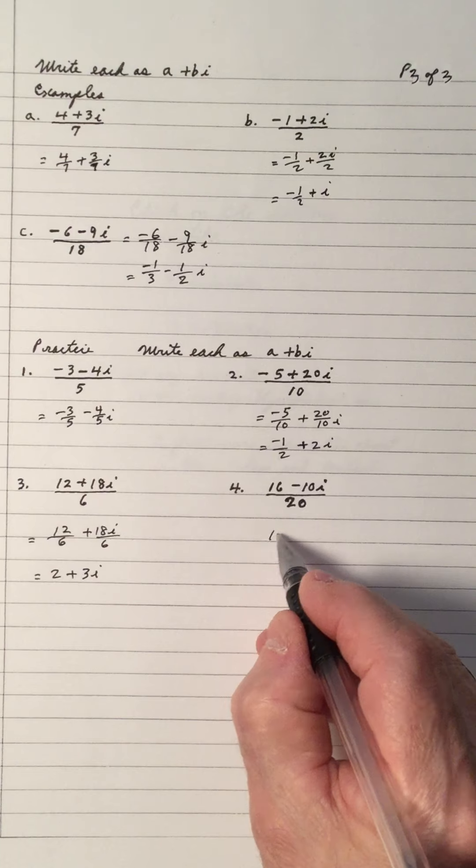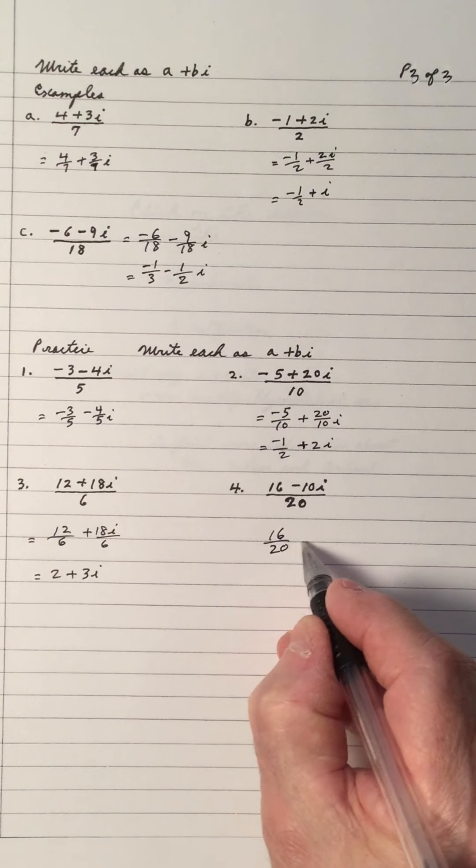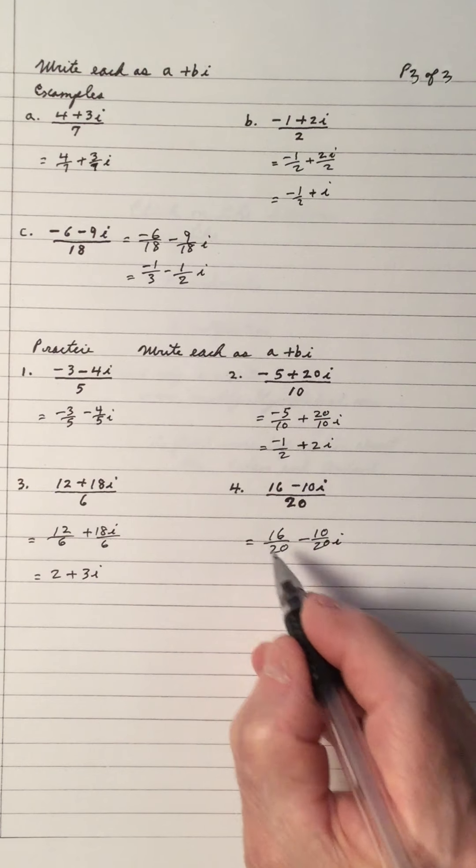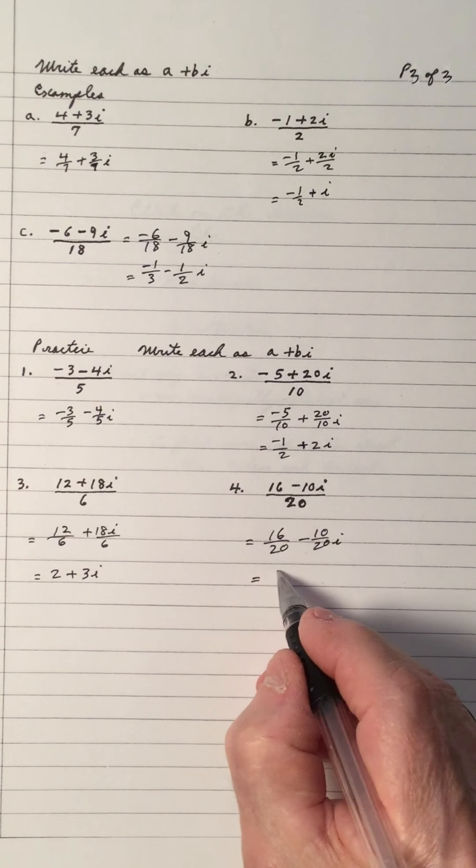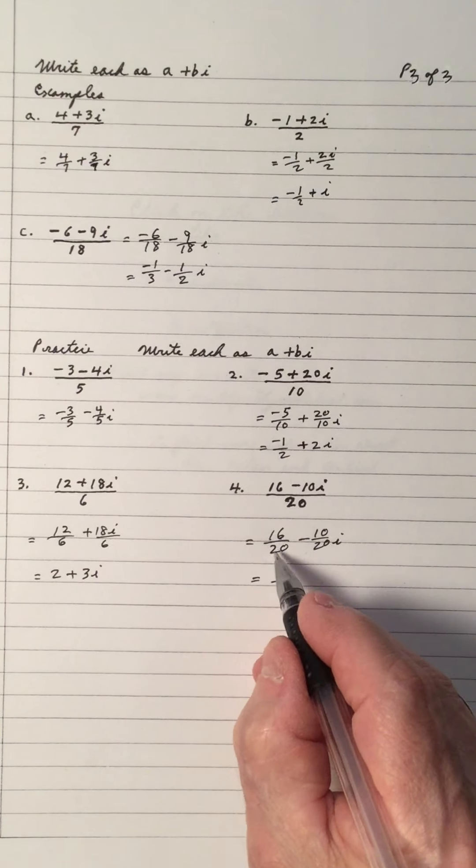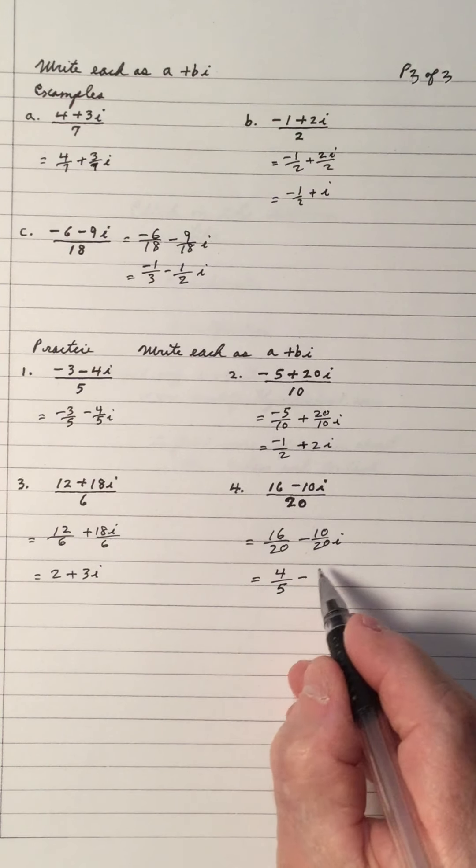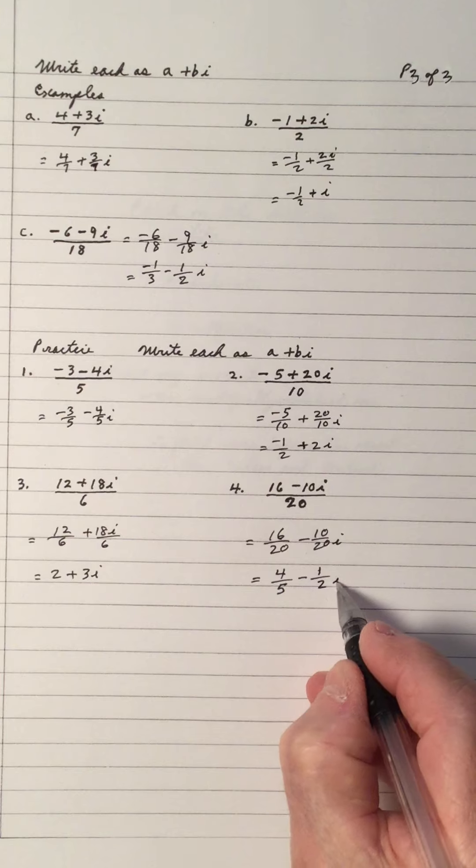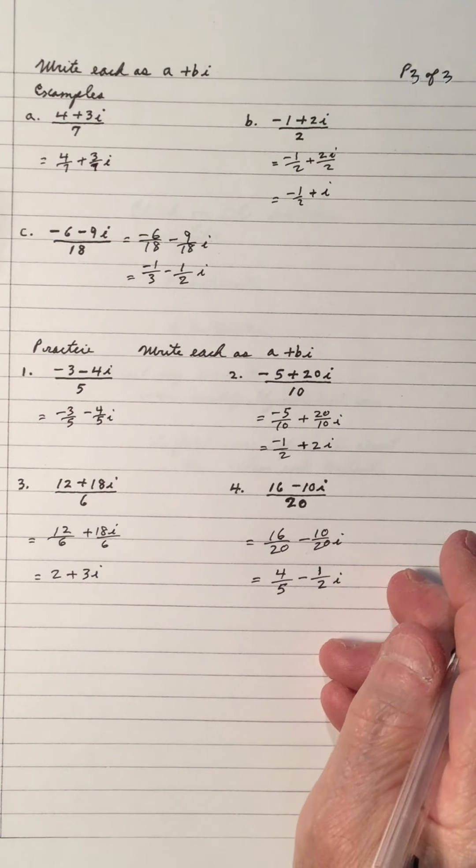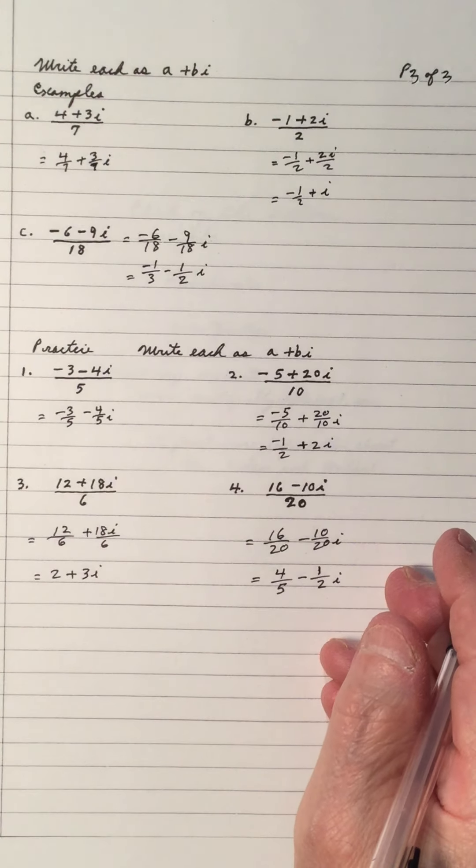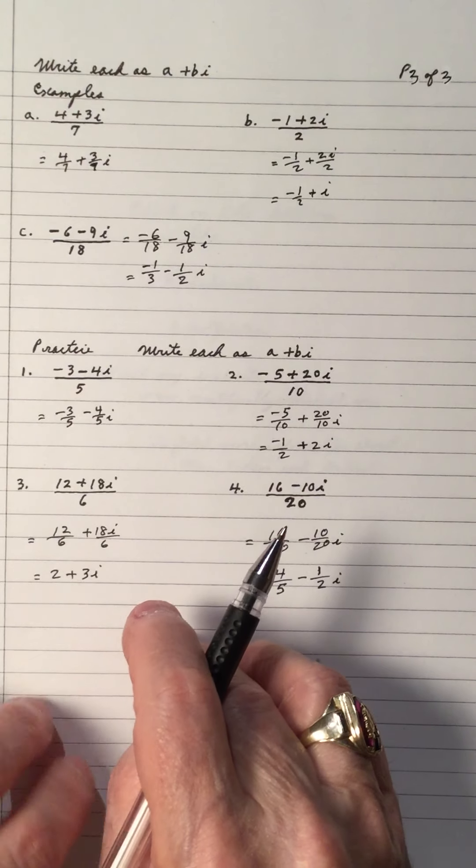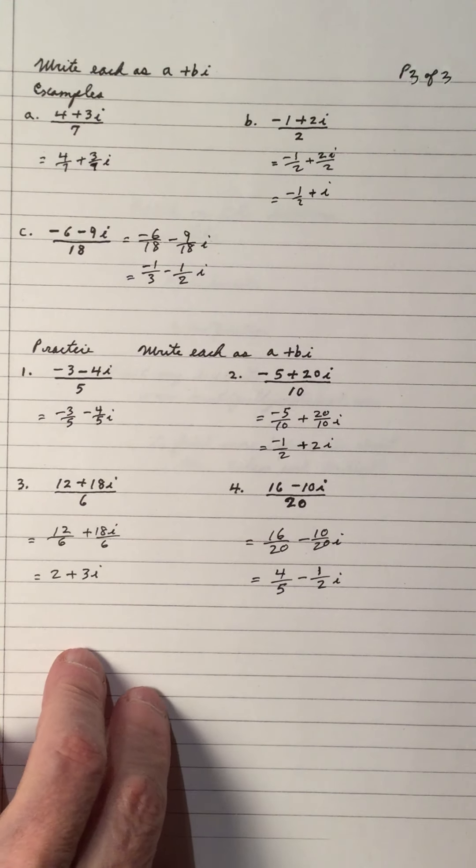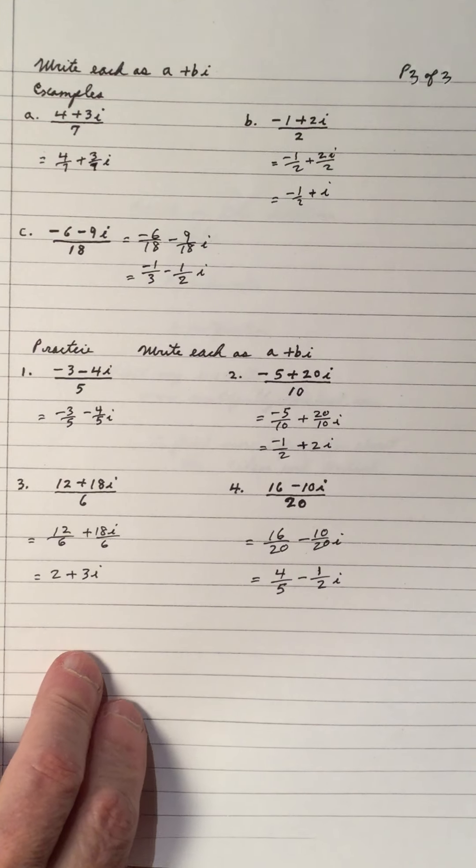Number 4. 16 is divided by 20. Subtract 10 divided by 20i. And, 4 into 16 goes 4. 4 into 20 goes 5. 10 into 10 goes once. 10 into 20 goes 2i. And, just simplifying because we'll need to use, when I'm doing this video, we'll need again when we do other videos on the complex numbers.